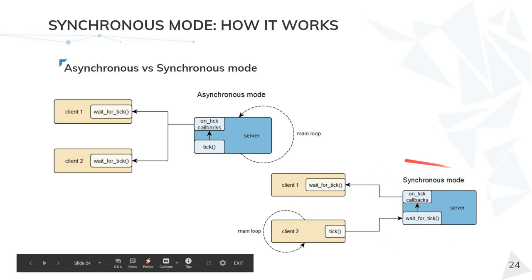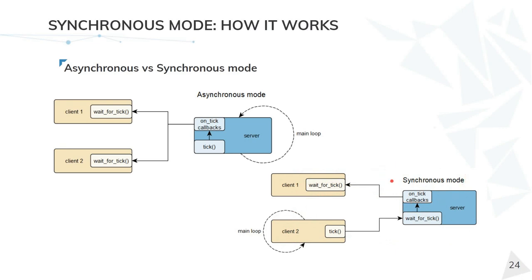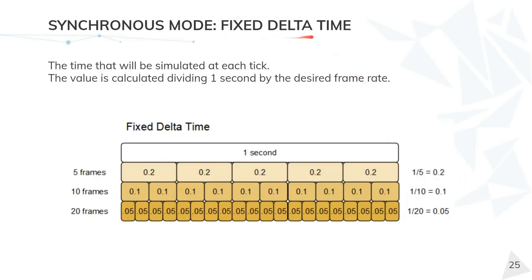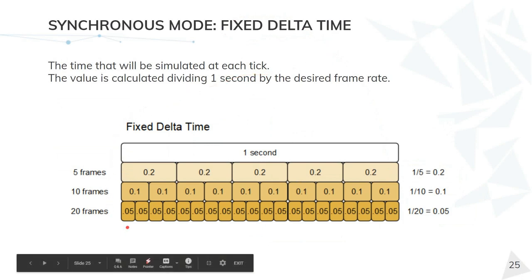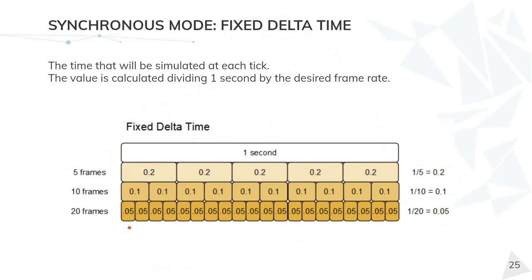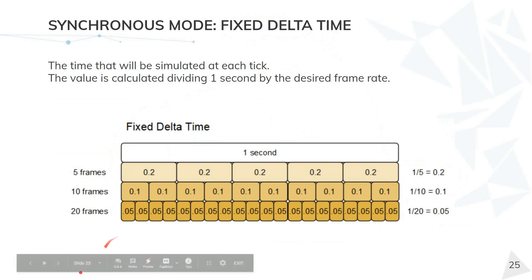For this mode to work properly, we need to define the fixed delta time. This is the time that the server will simulate in each frame, because the server will wait for an undetermined amount of time, so it cannot know how much time to take for the frame. By default, at 20 frames per second, we use this fixed delta time, which means 50 milliseconds.